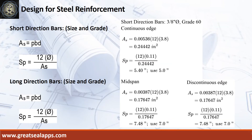At short direction, given continuous edge rho equals 0.00536, b equals 12 inches, and d equals 3.8 inches: area of steel is 0.24442 square inches, and spacing for 3/8-inch diameter bar is 5 inches on center. Given mid-span and discontinuous edge rho equals 0.00387, b equals 12 inches, and d equals 3.8 inches: area of steel for both is 0.17647 square inches, and spacing for 3/8-inch diameter bar is 7 inches on center.